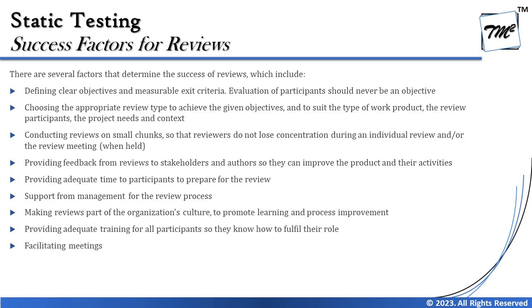There are several factors that determine the success of a review. Number one: defining clear objectives and measurable exit criteria. Evaluation of participants should never be an objective. You must have a clear objective for why you are conducting a review, which should be measurable — so that at the end, if you achieve that goal, you've done what you were supposed to do. Reviewing individual participants should not be an objective; the review should be conducted in an atmosphere of trust, and reviewer input should not be used to judge participants.